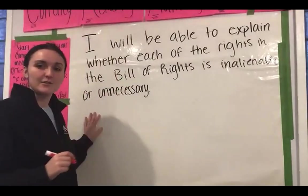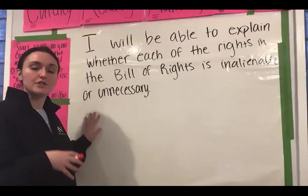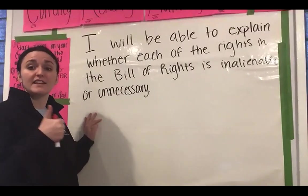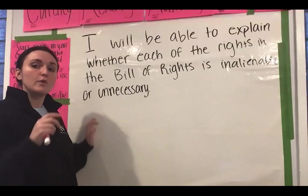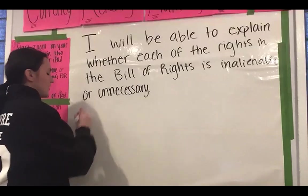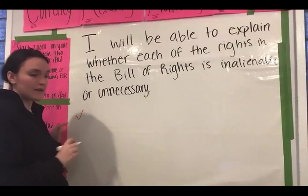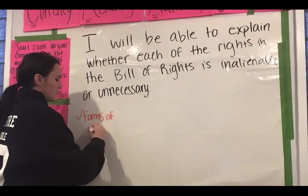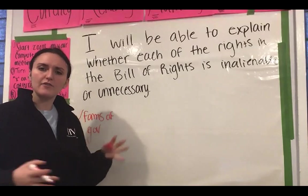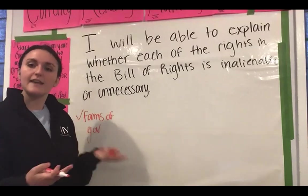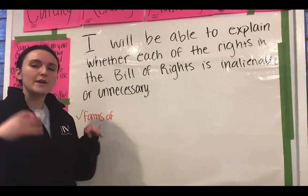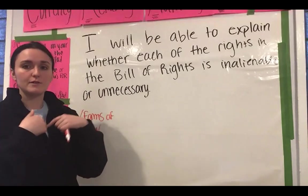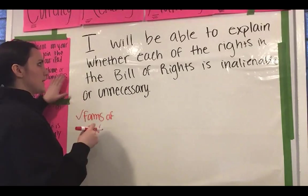Let's get started. Today we're going back into new content — we're going back into our American Government unit. As of yesterday, you guys did a fantastic job with review. We are now solid on the different forms of government. You've learned about different types of government: democracy, oligarchy, dictatorship. But now we really need to get into that part of our unit where we learn about our government — how our democracy works.